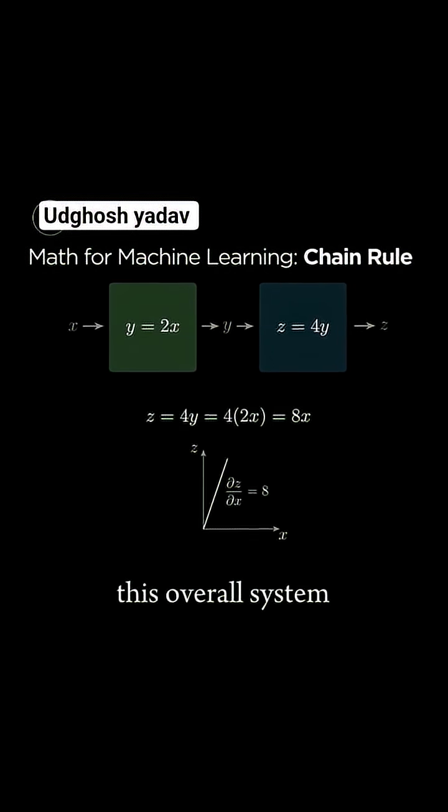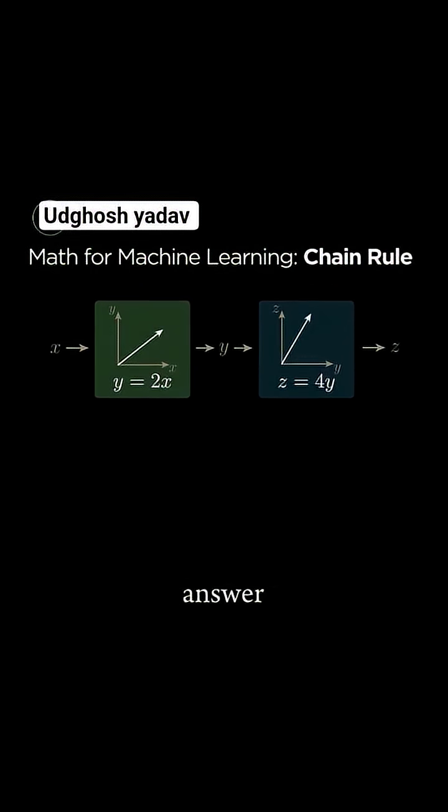The slope or derivative of this overall system equation is 8. Now, a more modular way to reach the same answer is to compute the derivative of each block individually.